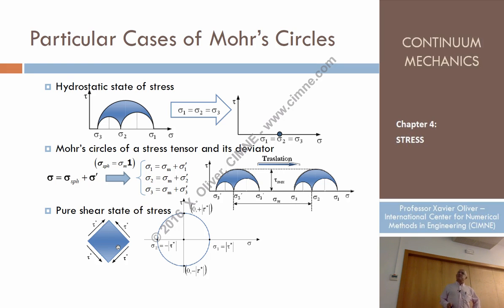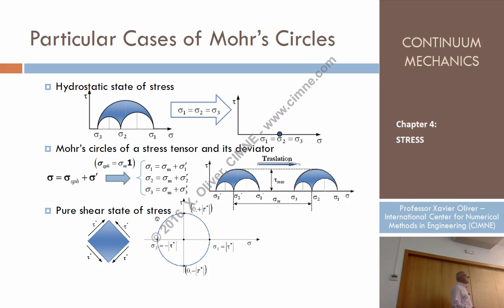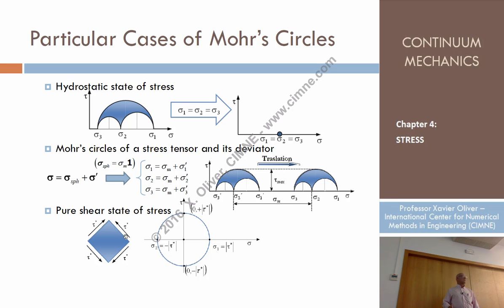There is another case worth mentioning, referring to 2D cases: what is called a pure shear state of stress. A pure shear stress state means that there exist a pair of orthogonal directions whose corresponding planes are subjected only to tangential stress — no normal stress. These planes must be orthogonal.